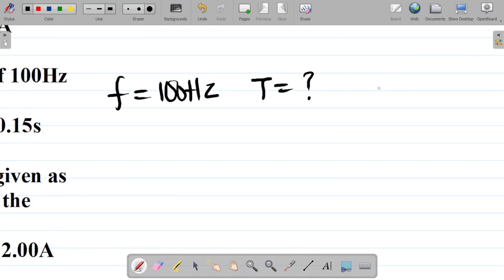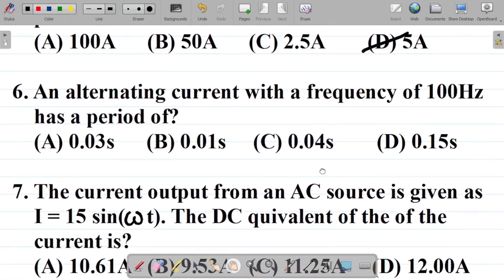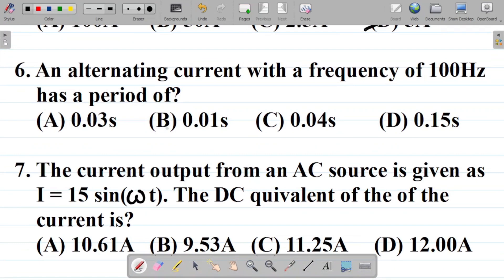From this question, we know that the relationship between period and frequency is that period t is equal to the inverse of frequency. So period t is equal to 1 over frequency, which is 100. I'm having 1 over 100, and that gives you 0.01 seconds. So the answer to this question is 0.01 seconds. That's option B.